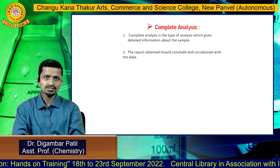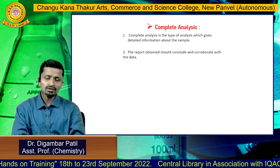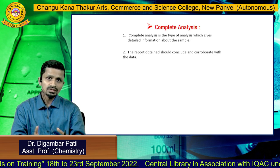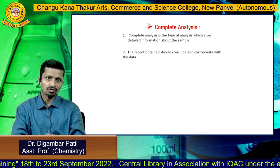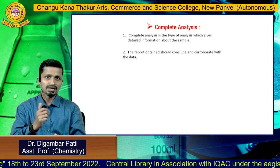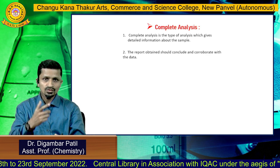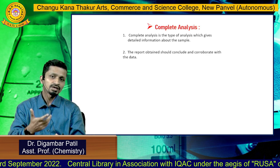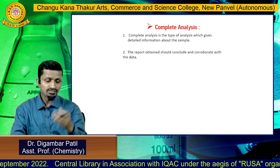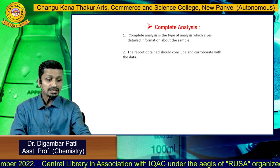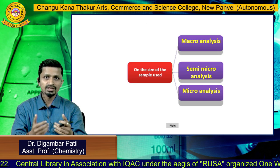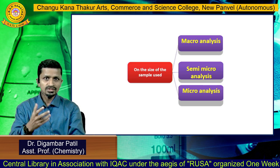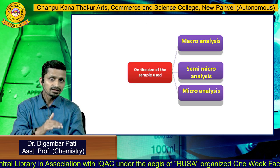The next type is complete analysis. Complete analysis involves giving detailed information about all components of the sample. These are the four types of analysis based on the nature of information required.